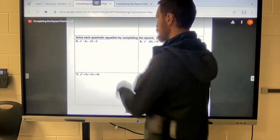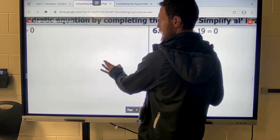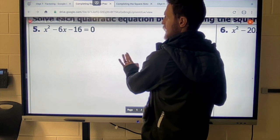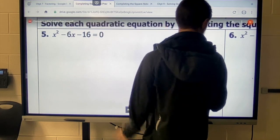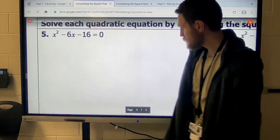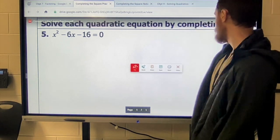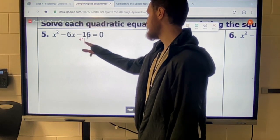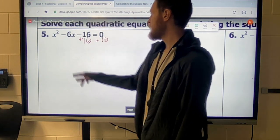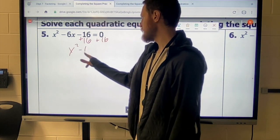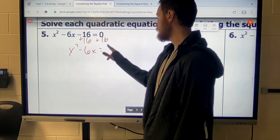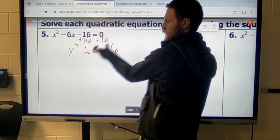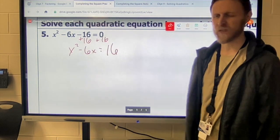We want to start by getting rid of that negative 16 by moving it to the other side. So I'm going to take the 16 over by adding it to both sides like that. That leaves me with x squared minus 6x equals 16. So I just kind of moved it over to the other side. Make sure you change the sign when you do that.